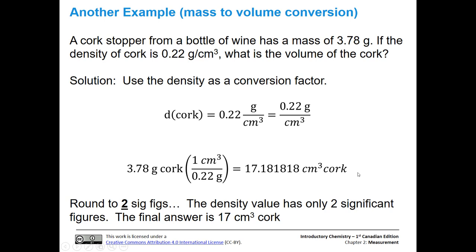Now again, we have too many significant figures. Our density only had two significant figures. Our mass had three, but the lower of the two is two significant figures. So one, two. The next number is a one, so we have 17 cubic centimeters of cork.